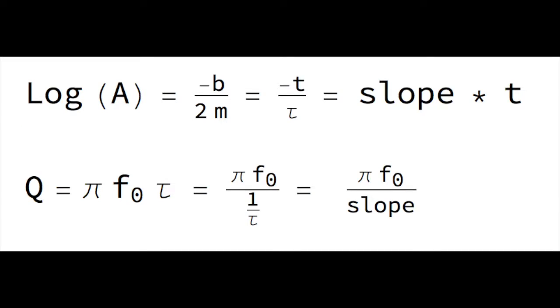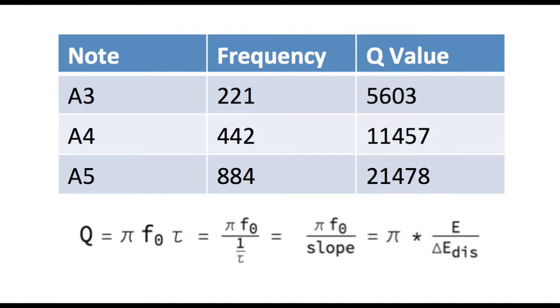The slope of this line is related to the Q value of the bar with the equation Q equals pi times frequency over slope. I used a linear least squares regression fit to determine the slope. I found the Q value of the upper, middle, and lower A's on the vibraphone, and my results are listed in this table.